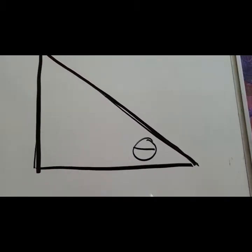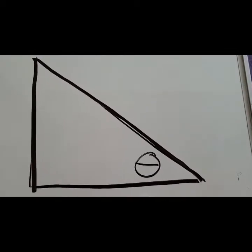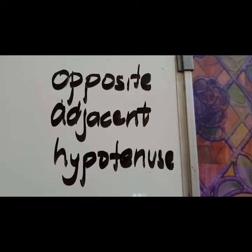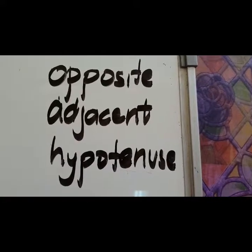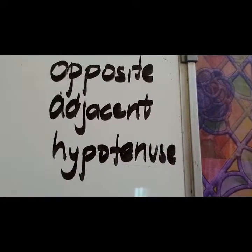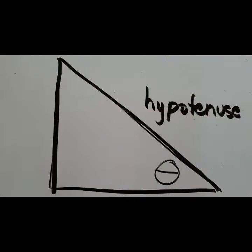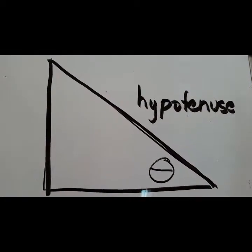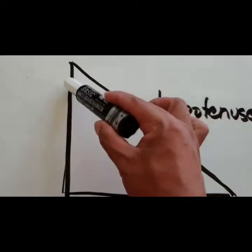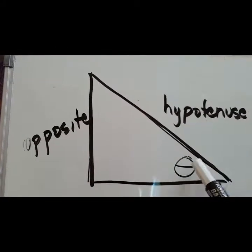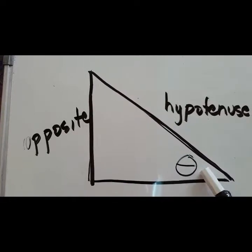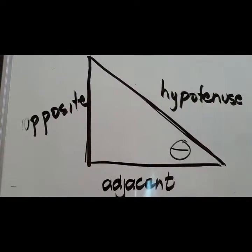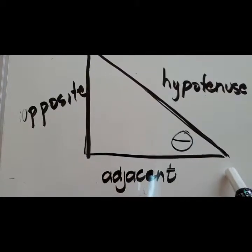Before we proceed to the computation, it's very important to know the parts of a right triangle. A right triangle has the opposite side, adjacent side, and hypotenuse. The hypotenuse is the longest side of a right triangle. Considering this reference angle, this is the opposite side, and this is the adjacent side.